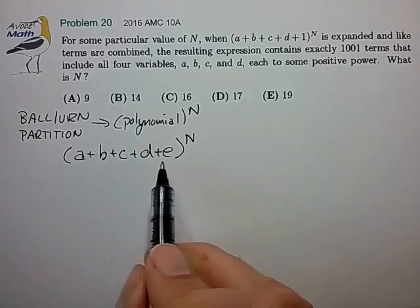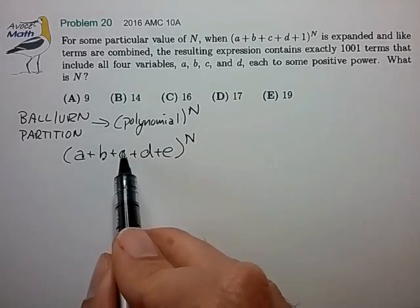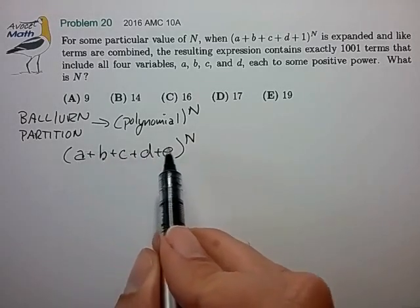Now when we expand this polynomial, we find that we're going to create terms that have varying exponents on the a, b, c, d, and e.